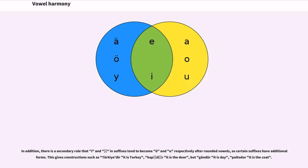In addition, there is a secondary rule that I and İ in suffixes tend to become U-diaeresis and U respectively after rounded vowels, so certain suffixes have additional forms. This gives constructions such as Türkiye'dir (it is Turkey), Kapıdır (it is the door), but Gündür (it is Day) and Paltodur (it is the coat).